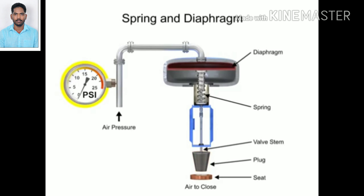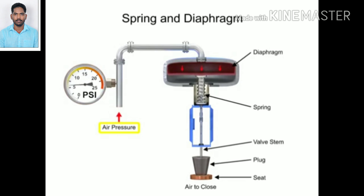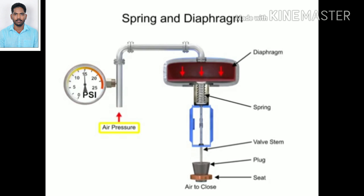A 15 PSI pneumatic signal enters the housing at the top of the actuator. As pressure is exerted on the diaphragm, a downward force is applied against the spring which moves the restrictor. The diaphragm moves until it creates an equal but opposing force against the spring, at which time the motion stops as the plug meets the valve seat.